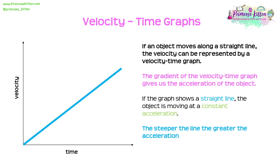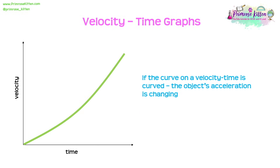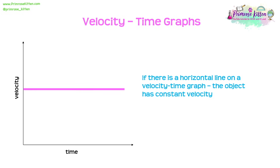If an object moves along a straight line, the velocity can be represented by a velocity-time graph. The gradient of the velocity-time graph gives the acceleration. A straight line means constant acceleration, and a steeper line means greater acceleration. If the curve on the graph is curved, the object's acceleration is changing. A horizontal line on a velocity-time graph tells us the object has constant velocity.